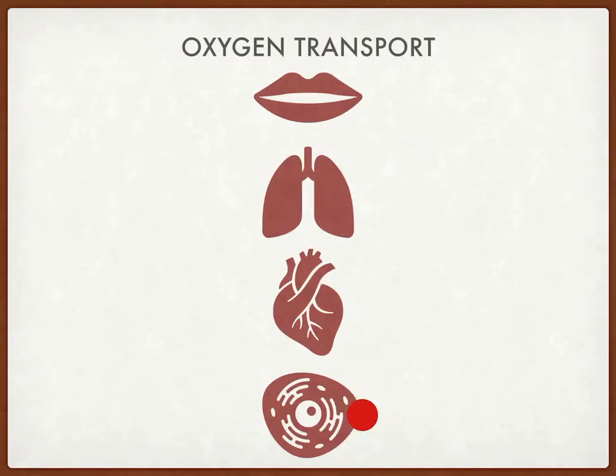So oxygen moves from the bloodstream inside the cell, and once inside the cell, we have aerobic metabolism where we take glucose and oxygen, run it through glycolysis, and we end up with carbon dioxide, water, and ATP.